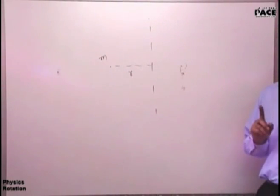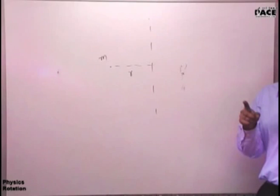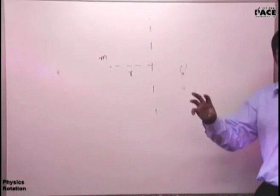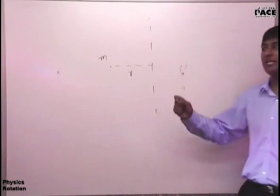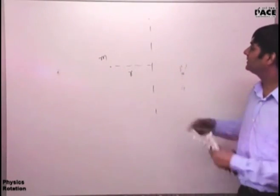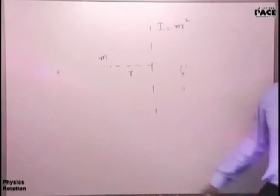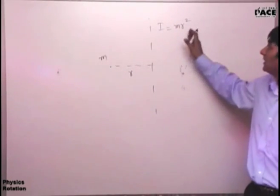All you have to do is involve, like F equals ma, so torque equals I alpha. Mass is replaced by a term called moment of inertia. Moment of inertia for a point mass about an axis is defined as mr squared.